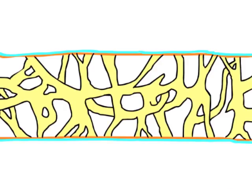The initial bone formed from intramembranous ossification is known as spongy bone, due to its sponge-like appearance.